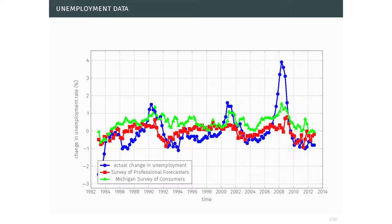I can plot a similar graph for the unemployment rate — again from FRED, the Survey of Professional Forecasters, and the Michigan Survey. When you stare at these graphs, and also when you do a more formal data analysis, you realize there are substantial biases in the household survey answers. What is striking from this picture is the upward bias in the unemployment answer.